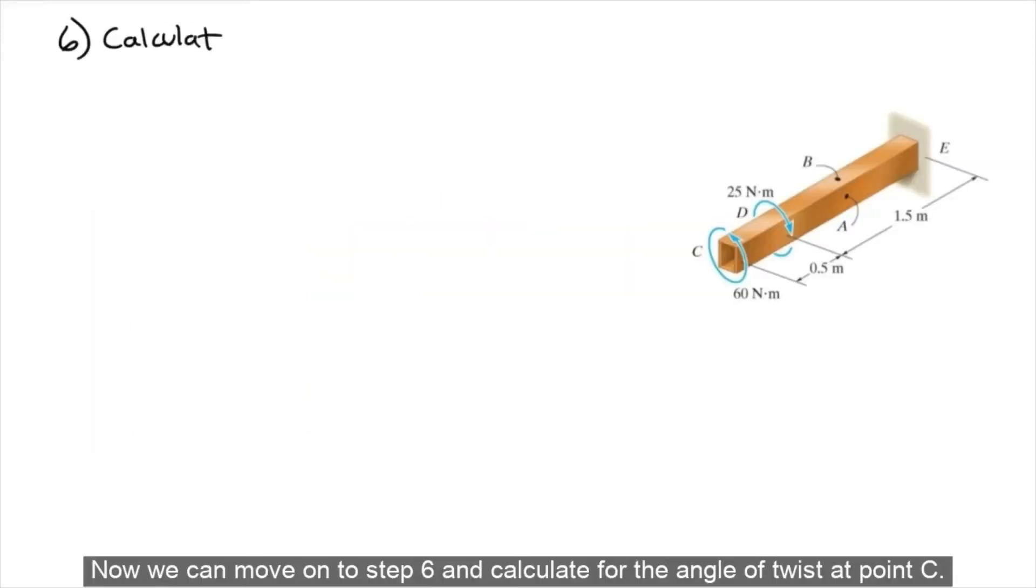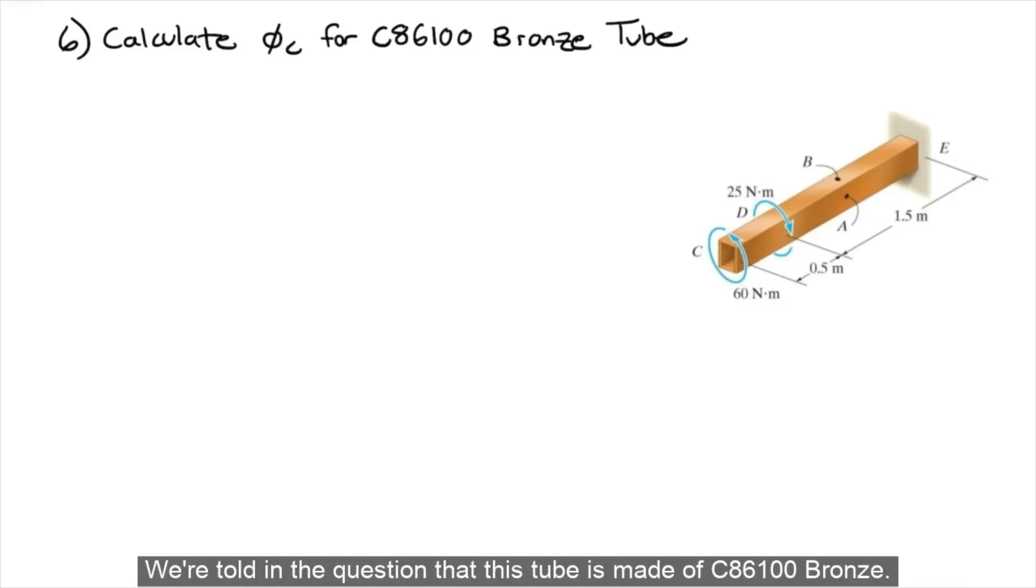Now, we can move on to step 6 and calculate for the angle of twist at point C. We're told in the question that this tube is made of C 86100 bronze.